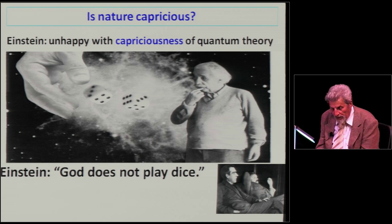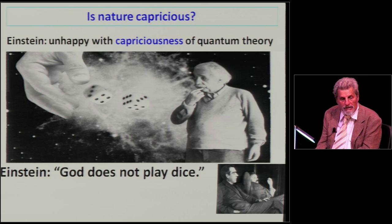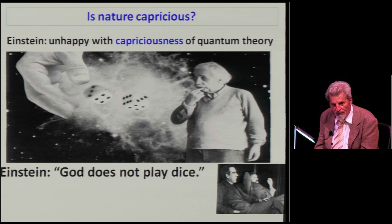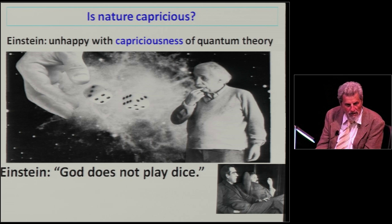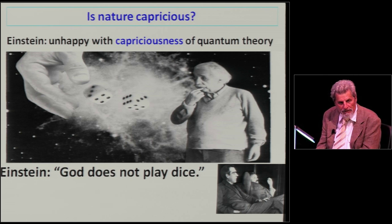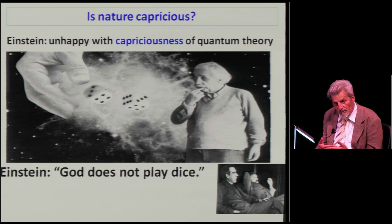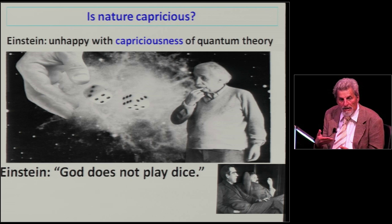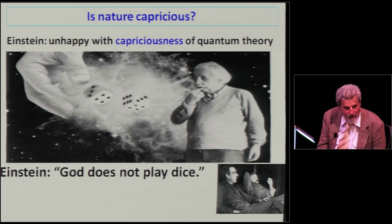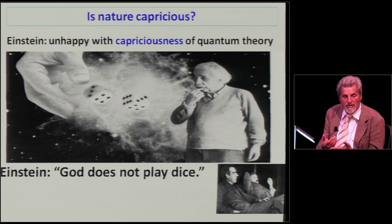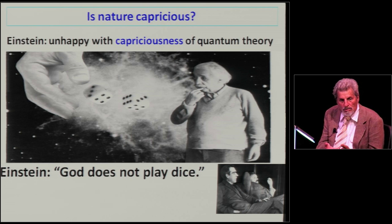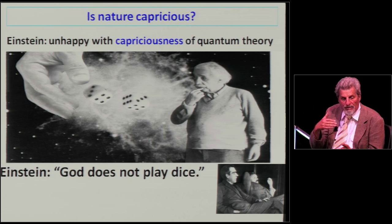Suppose that there will be a future physics, another revolution in physics, in which time will appear in a different way. Time will appear in such a way that, for example, in the decision we make in the present, this decision is not only affected by the past, but it's also affected by the future.